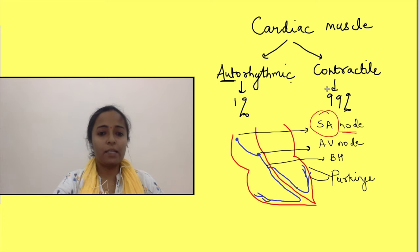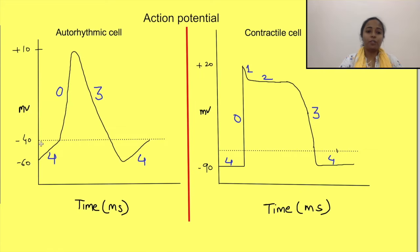Now, these autorhythmic cells and contractile cells have different types of action potentials. That is, action potentials of different shapes, and also the ions which are responsible for the action potential are different in both types. Here in this diagram, the left side is showing action potential of autorhythmic cells while the right side is showing action potential of contractile cells. You can very well appreciate the difference in the shapes of the two action potentials. Most importantly, see the slope of change in membrane potential in autorhythmic cells. This is important for automatic generation of action potential.